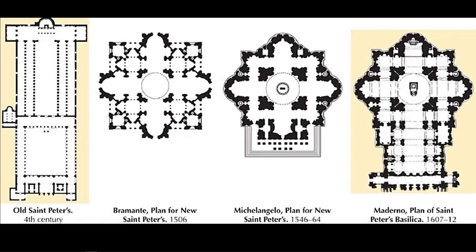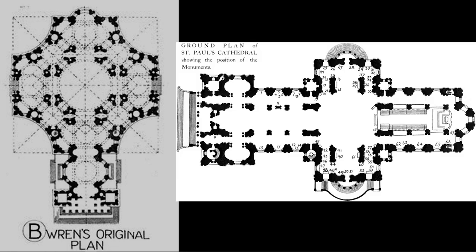The controversy about these shapes continued even into the design of St. Peter's Basilica in Rome through the 1500s and early 1600s. The architects wanted a Greek cross design, but the church authorities wanted more of a Latin basilica where you could process up to the altar. The same thing happened in St. Paul's Cathedral in London in the late 1600s — Christopher Wren wanted more of a Greek cross design, but the dean and chapter wanted a longer design for similar reasons.